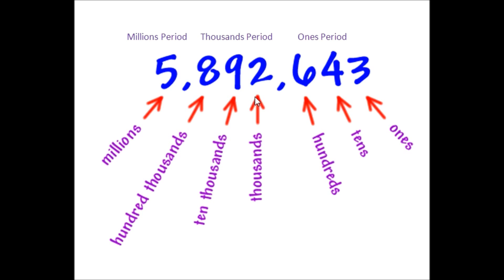We go to the next period. It follows that same pattern: ones, tens, hundreds. We have thousands, ten thousands, hundred thousands.